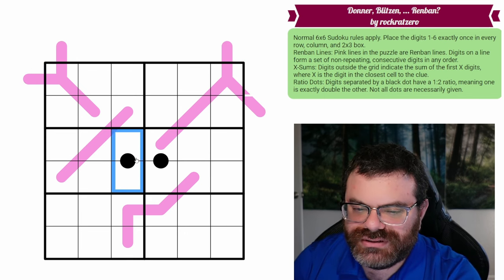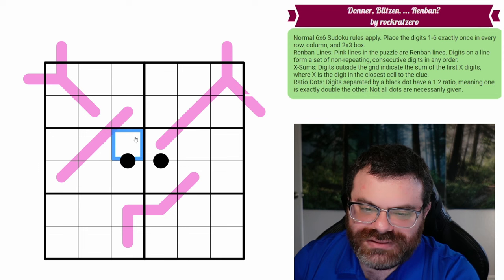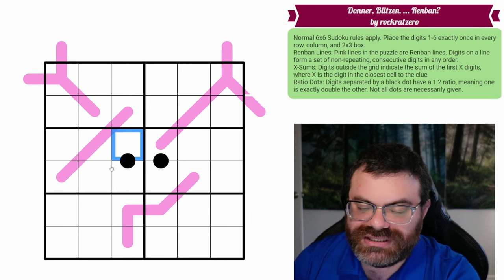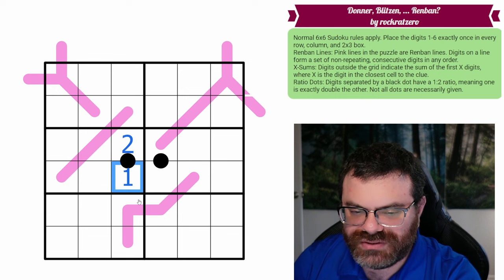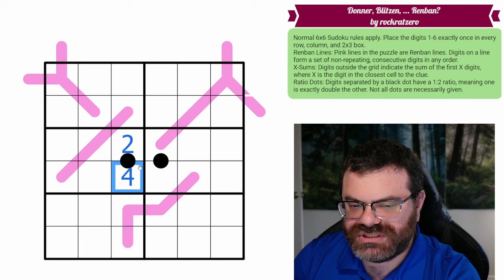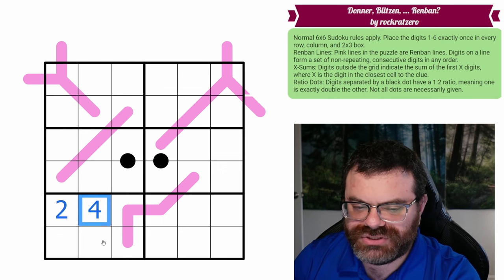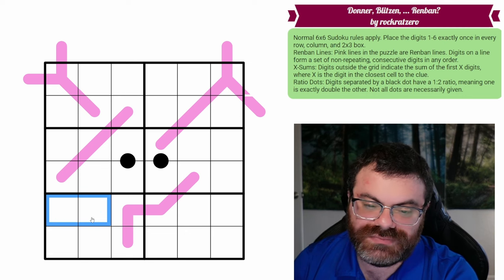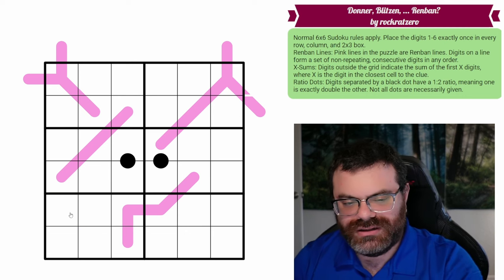Additionally, we have ratio dots in the grid. That's these black dots. The digits separated by the black dot have a 1 to 2 ratio, meaning one's exactly double the other. So if this is a 2, this could be a 1, because 2 is double 1, or it could be a 4, because 4 is double 2. Not all the dots are given, so there could have been a dot here. There's not. That's perfectly fine.